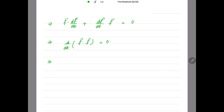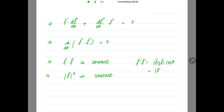So the derivative of f · f equals zero. Whenever the derivative of a quantity is zero, that quantity is a constant. Therefore f · f is constant, which means |f|² is constant — because f · f = |f| · |f| · cos(0°) = |f|².